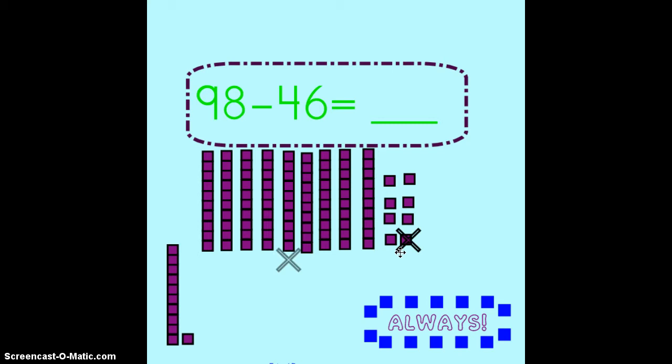One, two, three, four, five, six. When I x out my six ones I have two ones left. So I'm going to put a two in the ones place. I need to take away four tens for the number 46.